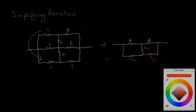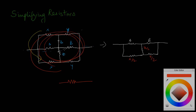And that's how we simplify resistors — going from a crazy circuit like this to a single equivalent resistance covering the whole circuit. I hope this video taught you something and helped you understand the various different ways in which we can get a complex circuit down to a simple one.